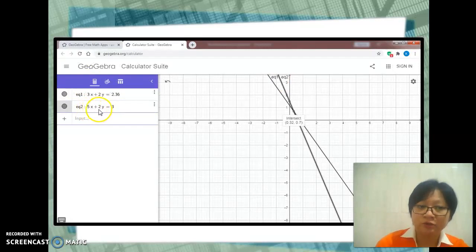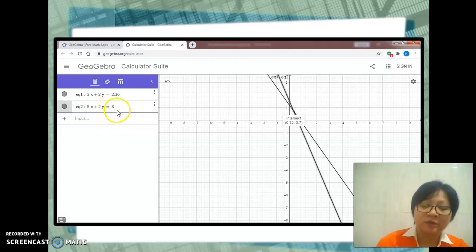Five oranges and two apples cost $3, so 5x plus 2y equals 3. Press Enter. GeoGebra will automatically generate the label eq2, and the straight line graph will be labeled as eq2.